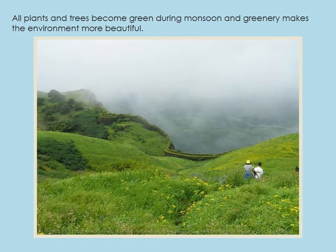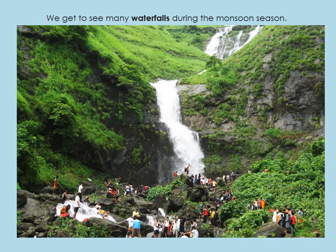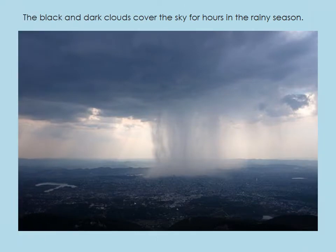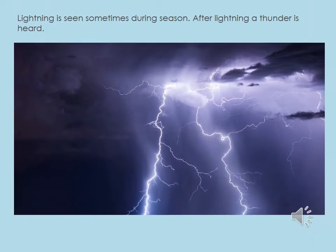All plants and trees become green during monsoons, and the greenery makes the environment more beautiful. We get to see many waterfalls during the monsoon season. The black and dark clouds cover the sky for hours in the rainy season. Lightning is seen sometimes during this season, and after lightning, we hear thunder.